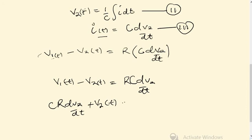Plus V2 is equal to V1(t). This is the final answer. This equation relates V1 and V2. This is the differential equation of the given circuit.